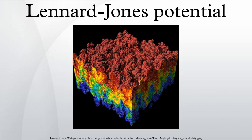There are many different ways of formulating the Lennard-Jones potential. The following are some common forms. The AB form is a simplified formulation that is used by some simulation software packages. This is the form in which Lennard-Jones wrote the 12-6 potential.